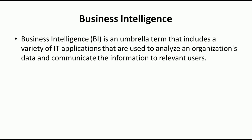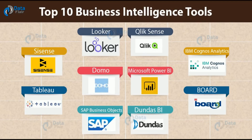Here is an example of how different Business Intelligence tools look. These are some of the most widely used BI tools in the market: Looker, QlikSense, Domo, Microsoft Power BI, IBM, Board, SAP, and so on. We usually use these tools to analyze our business, and then depending on the insights from that analysis, we can improve the business.